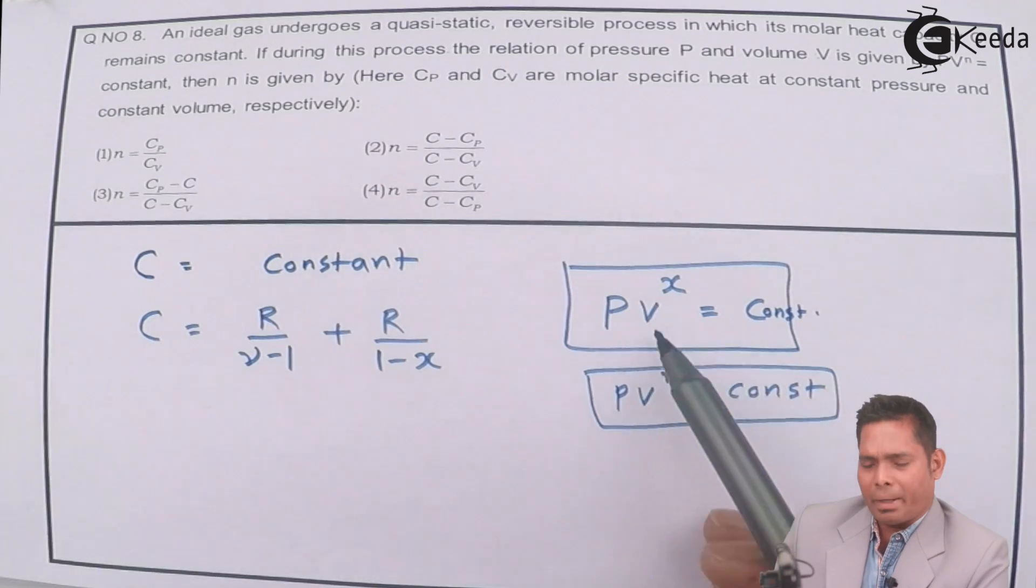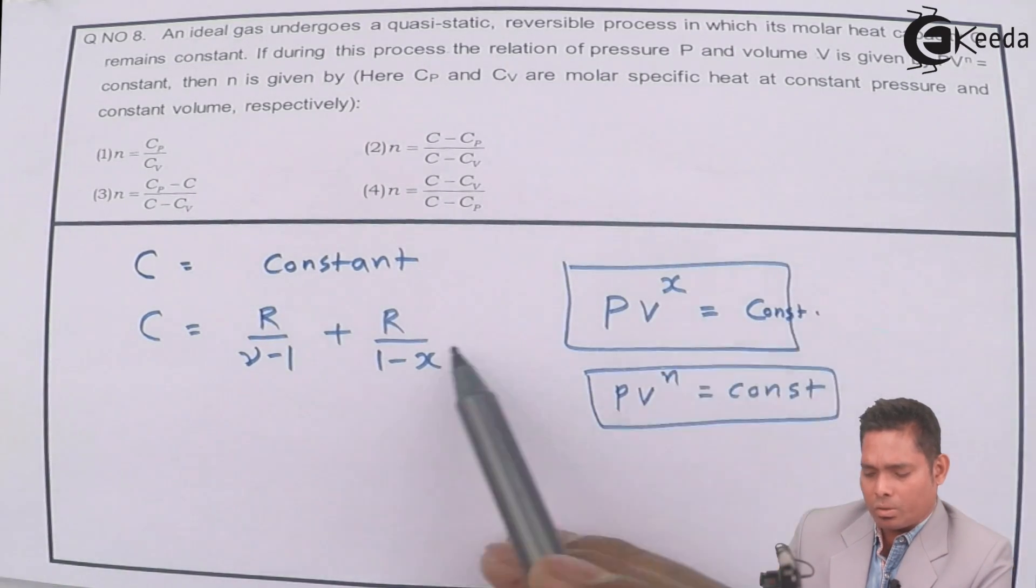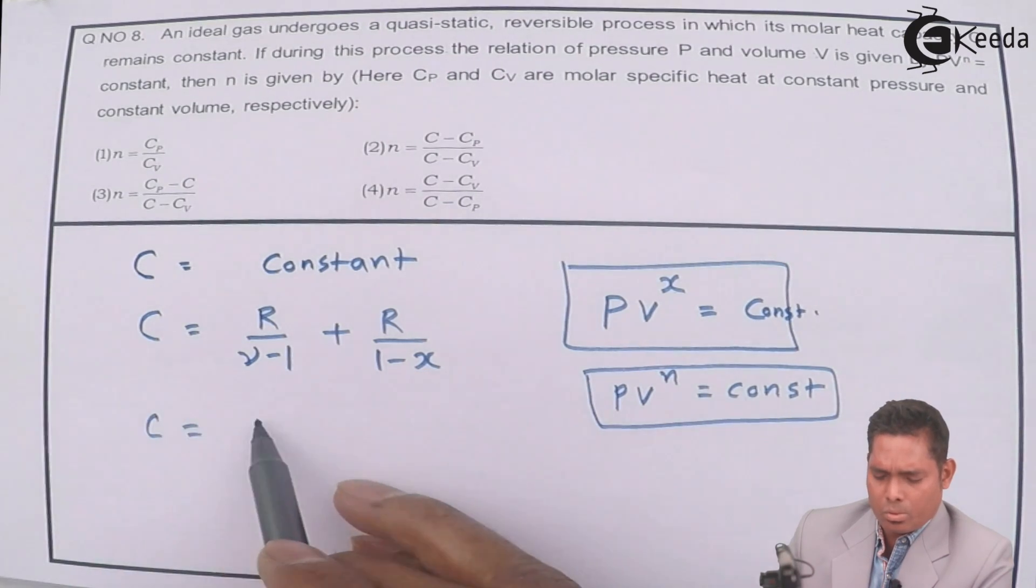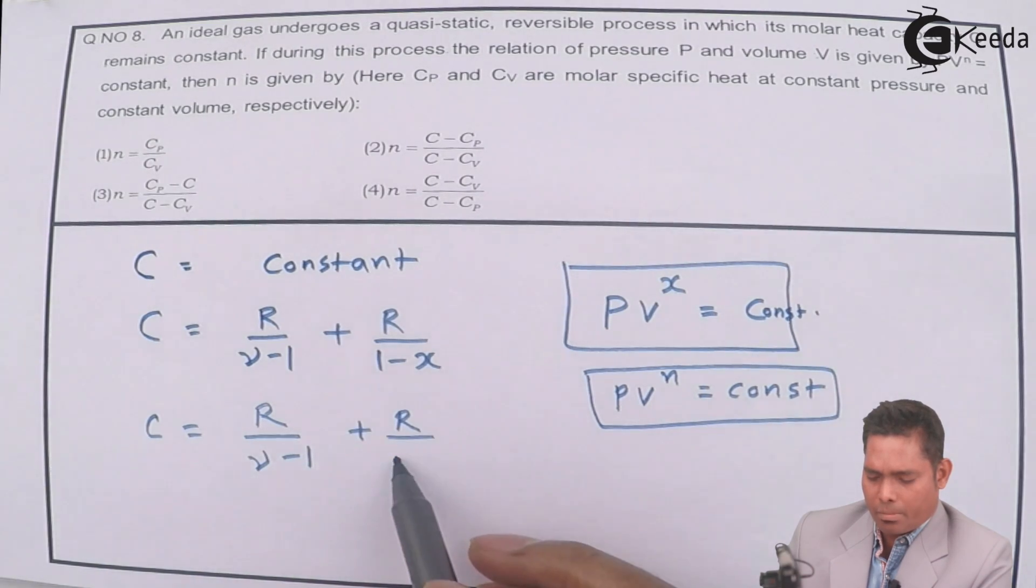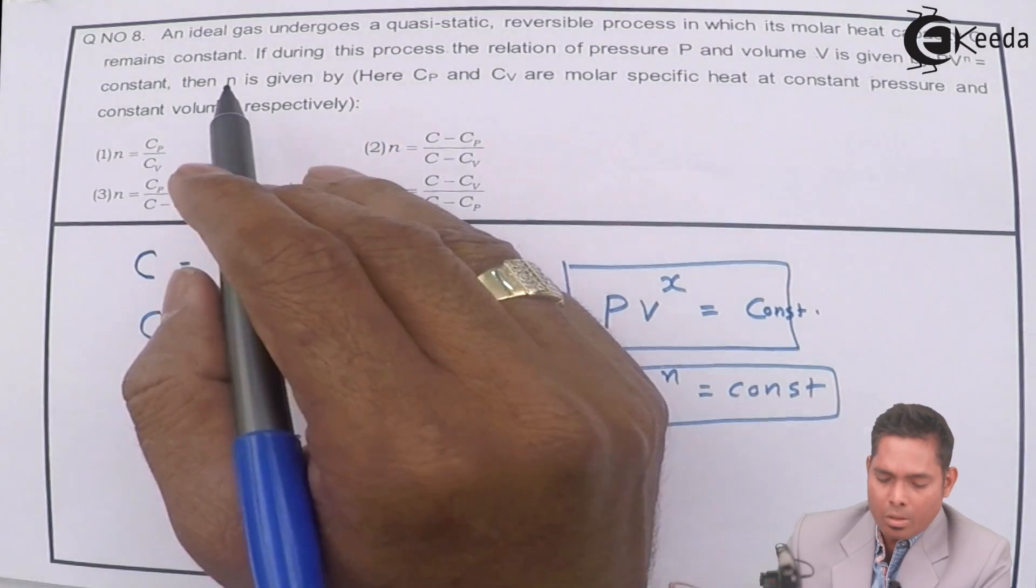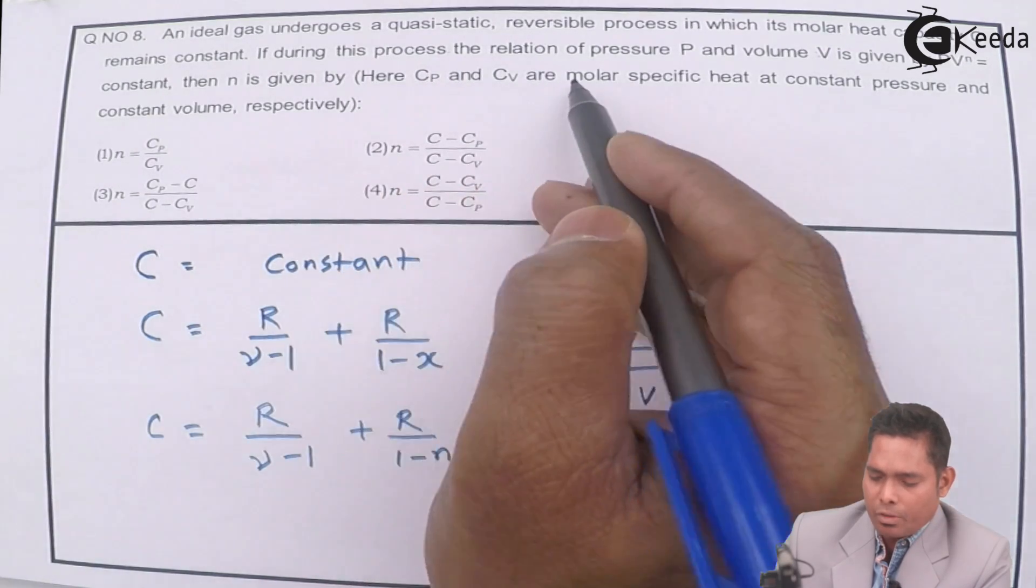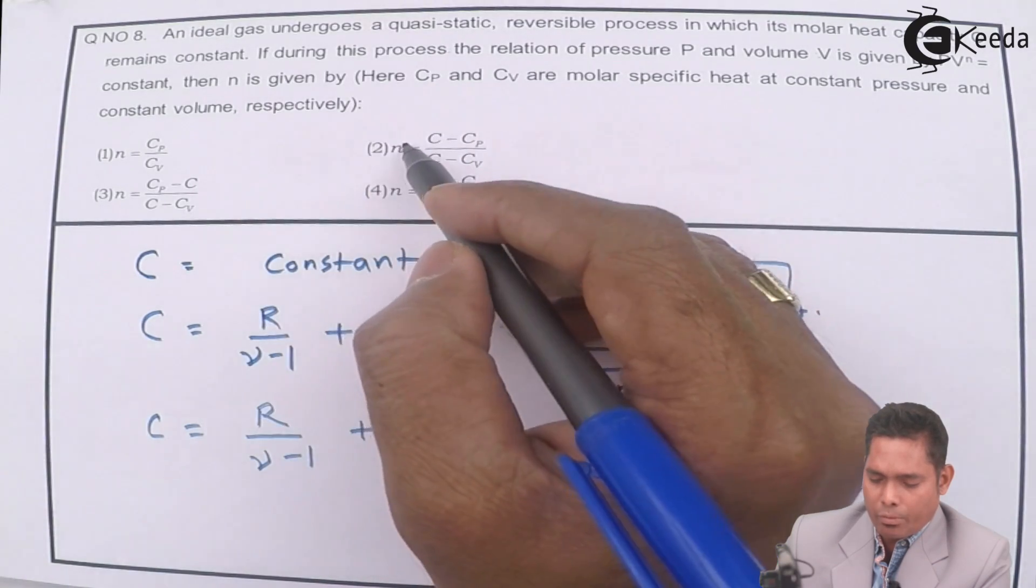And we know that if you compare these two, earlier we write PV raised to X is constant, and if it is PV raised to N, there is no problem. In place of X, we have got N. So put N here. Then we have C equals R divided by gamma minus 1 plus R divided by 1 minus N. In place of X, you write N here. Where N is given by, Cp and Cv are molar specific heat at constant pressure and volume respectively. So you have to find the value of N.